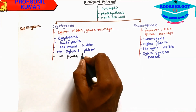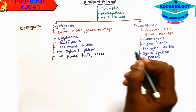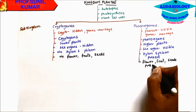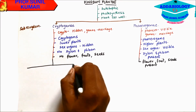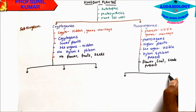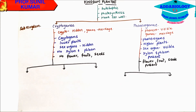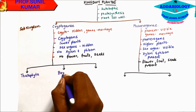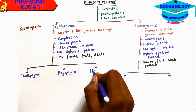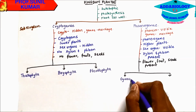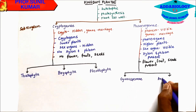In Phanerogamae, they have flowers, fruits, and seeds. Cryptogamae is further divided into three divisions: Thallophyta, Bryophyta, and Pteridophyta. Phanerogamae has Gymnosperma and Angiosperma. Let's understand the meaning of these words: Thallo means Thallus, Bryo means Moss, Pterido means Feathery Structure, and the word Phyta is common in all — it means Plant.